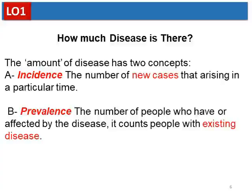Now looking at prevalence. Prevalence is the number of people who have or are affected by a disease — it counts people with existing disease. The difference is that prevalence does not count only current new cases; it counts all cases at a given moment, whether those cases were recently diagnosed (new cases) or were already present before (existing cases).